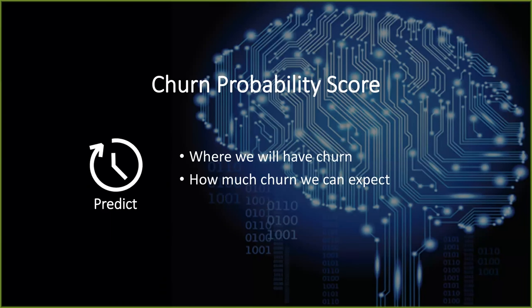The next benefit is predict: the ability to understand where we will have churn and which customer will have churn. This is important because we might want to look at churn by region, by vertical, or by success manager. Understanding where we're going to have churn is very important, because that leads into planning and communication. Also, not just where but how much churn can we expect — will products disappear from the customer's contract, will they decrease in seat utilization? How much churn can we expect so we can forecast accurate numbers for quarterly reporting to the board or other stakeholders?